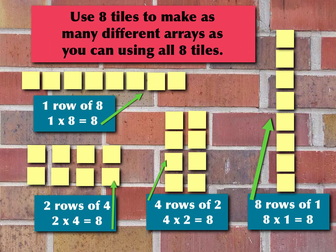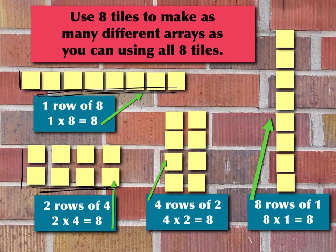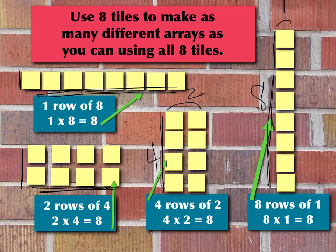So using those same eight tiles, we made four different arrays using all eight tiles every time. In this one we used one row of eight — one times eight is eight. In this one we used two rows of four — two times four is eight. In this one we used four rows of two — four times two is eight. And the last one is eight rows with one in each row — eight times one is eight. So there are four different ways to make arrays using eight tiles.